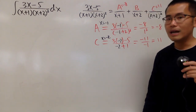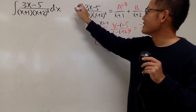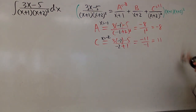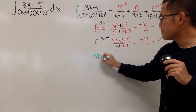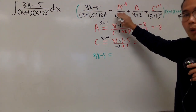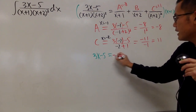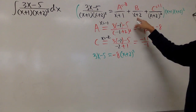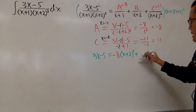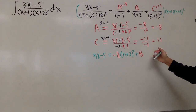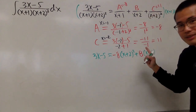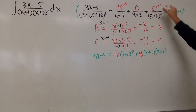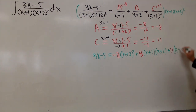For constant B, we clear the denominators by multiplying everything by the LCD, which is x plus 1 times x plus 2 squared. The left side becomes 3x minus 5. On the right: the first term gives negative 8 times x plus 2 squared; the second term, one factor of x plus 2 cancels, leaving B times x plus 1 times x plus 2; and the last term gives 11 times x plus 1.